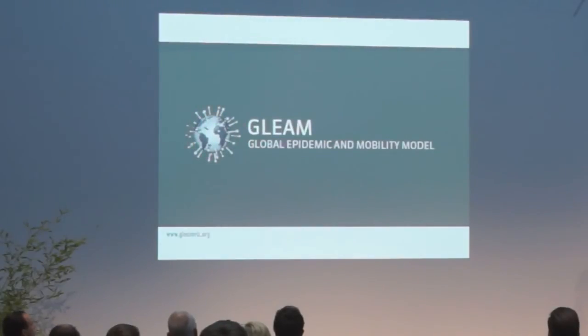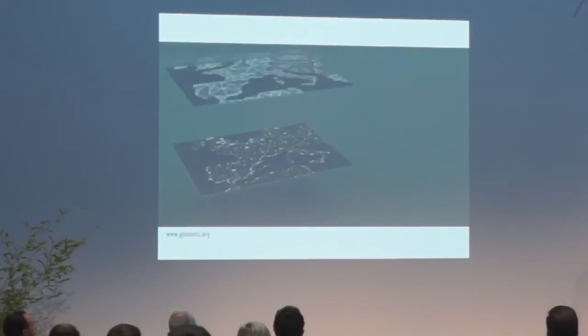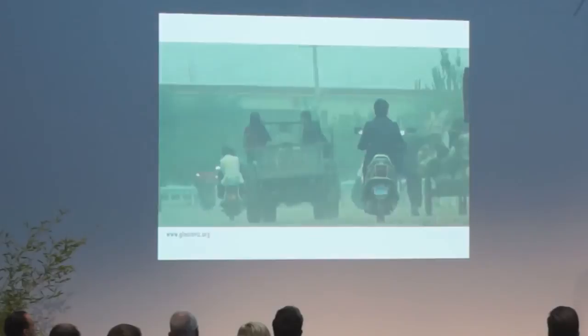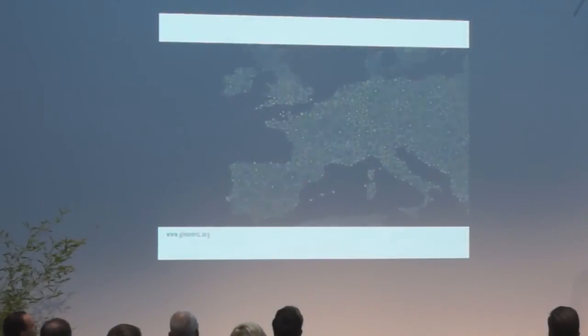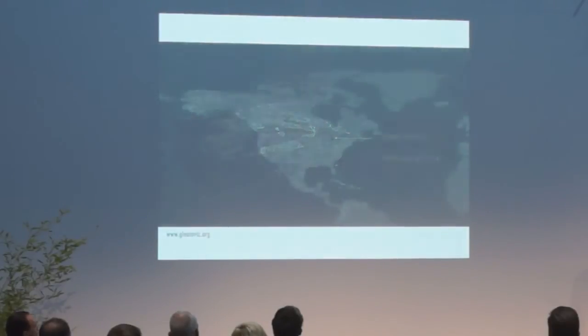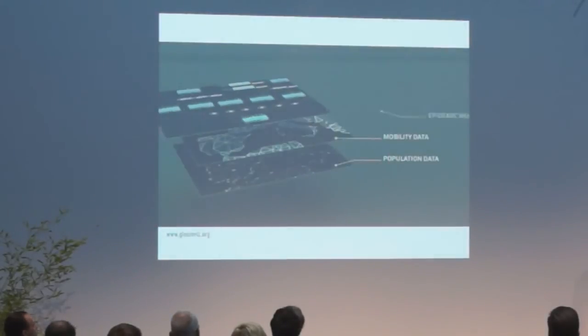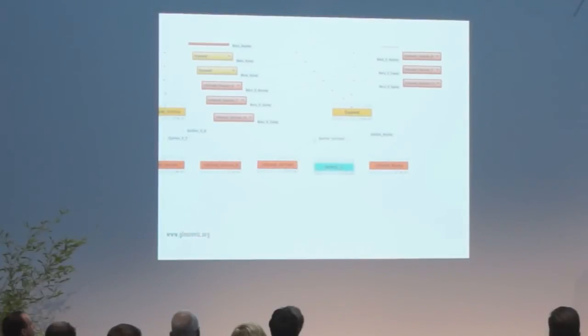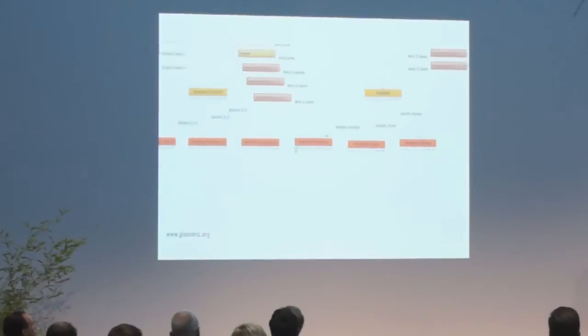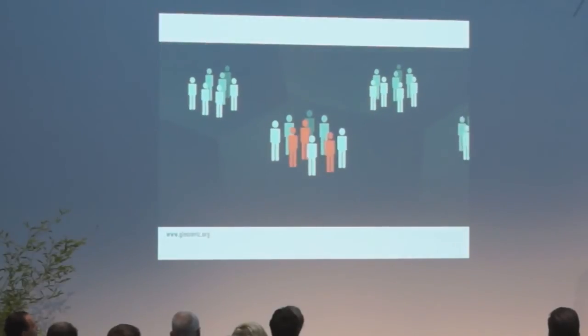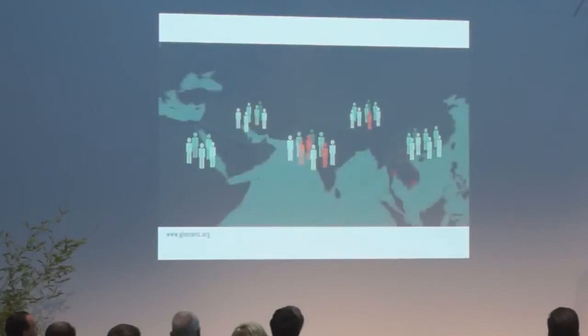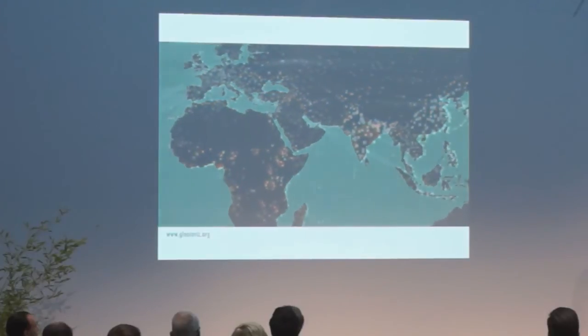GLEAM produces simulations of the global spread of infectious diseases by integrating three layers. The first layer looks at people and their geographic distribution with respect to major transportation hubs. The second layer adds data on the mobility of the people — how they commute and travel around the globe. The third and final layer adds the epidemic model, which can define complex disease scenarios and response strategies such as vaccination campaigns or emergency travel restrictions. Combining these three layers, GLEAM simulates epidemic spread at a worldwide scale.